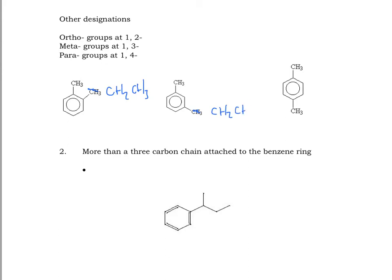Now, we can use letter designations. Ortho is going to be creatively an O, meta, M, P for para. So, 1,2 was going to be O, ethyl, methyl, benzene. Because my alkyl groups are located at 1 and 2.